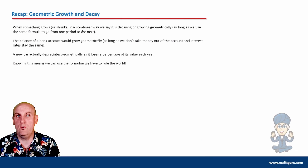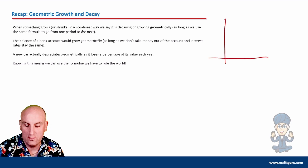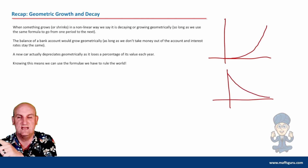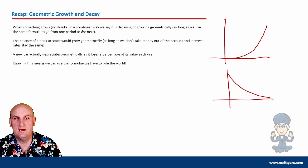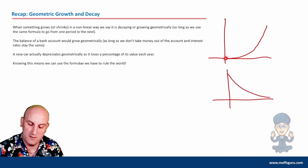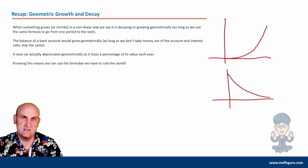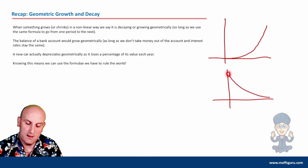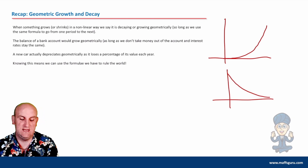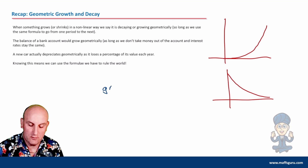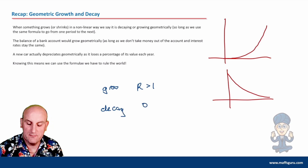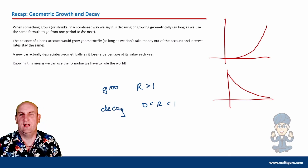Remember, we can both grow and decay geometrically. If something goes up slowly and then quicker and quicker, that is geometric growth. If it starts pretty high and then comes down less and less through some sort of a curve, that is geometric decay. An example might be interest — when I open a bank account, the interest starts growing on the interest, so the money grows quicker and quicker the longer you leave it. A car depreciating by a certain percentage each year is an example of decay. When things grow, R is greater than one. When things decay, R falls between zero and one.